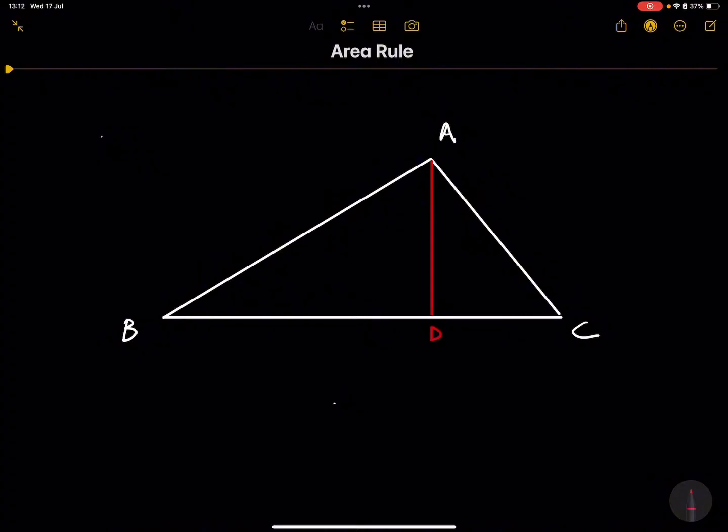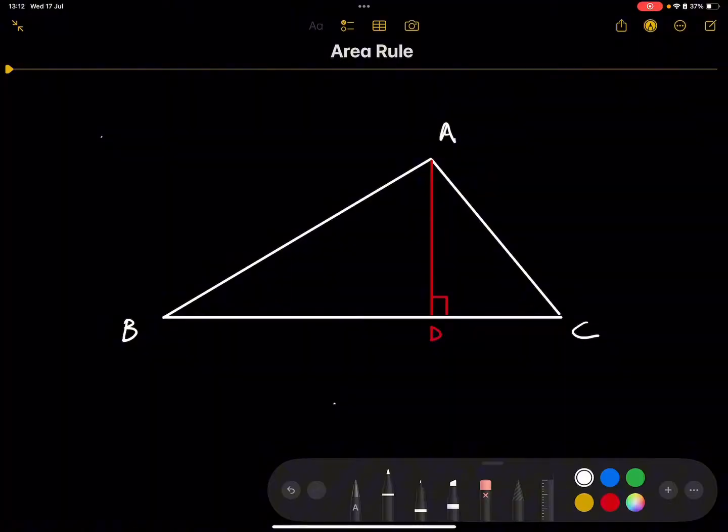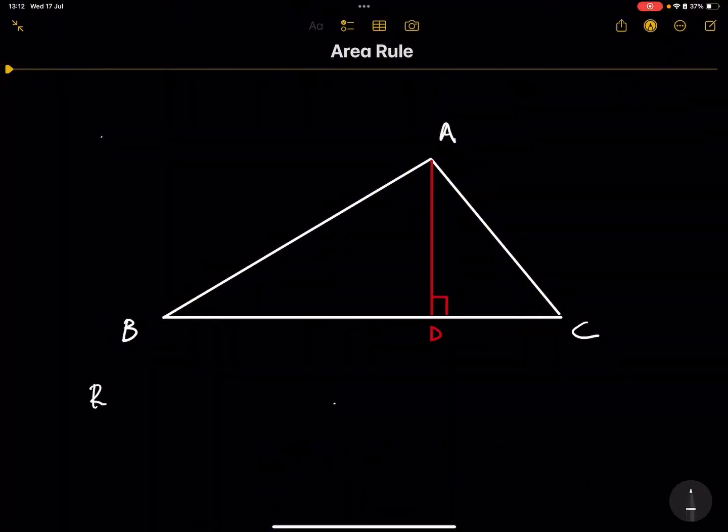Line AD is a perpendicular line. Line AD is actually a line that is perpendicular to BC.